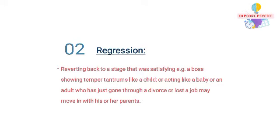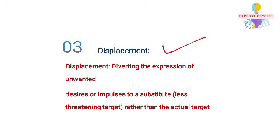Regression means acting like a baby when under stress. The next mechanism is displacement. Displacement is when a person redirects their feelings toward a safer target. For example, if an employee's boss insults him, he goes home and takes it out on his child. This is the defense mechanism called displacement.